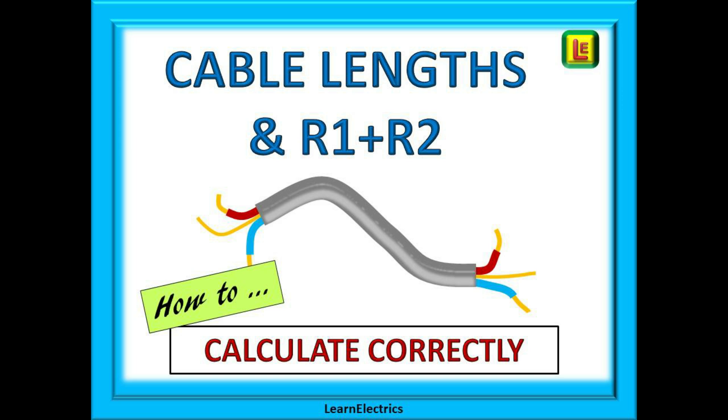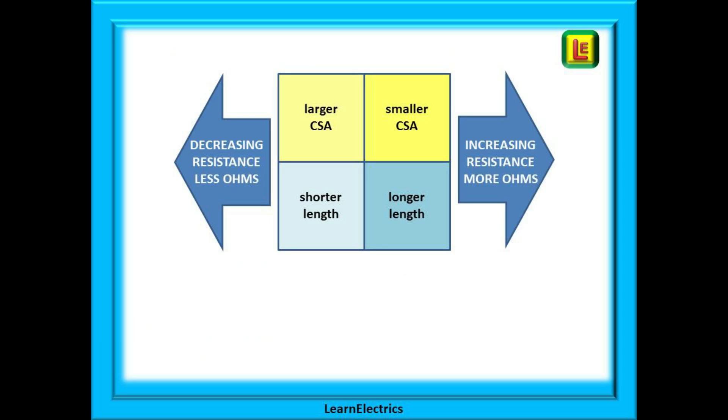But how do we work the calculations backwards? If we know the resistances, how do we calculate the lengths?